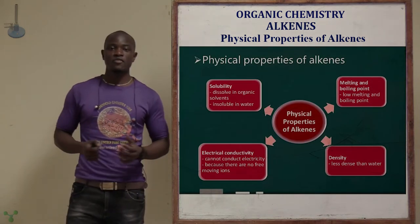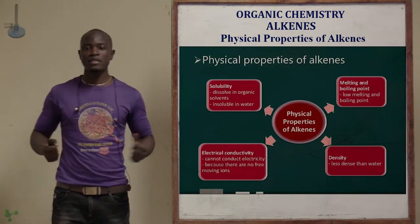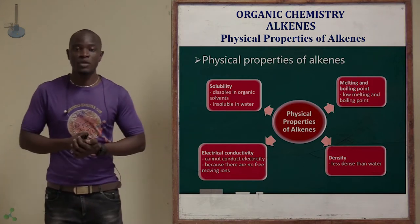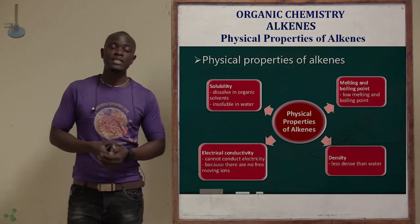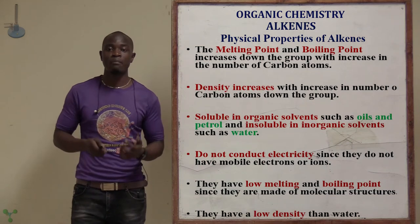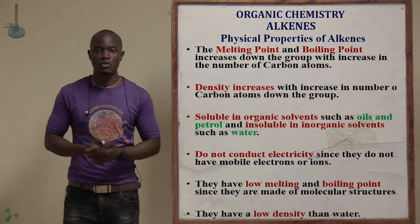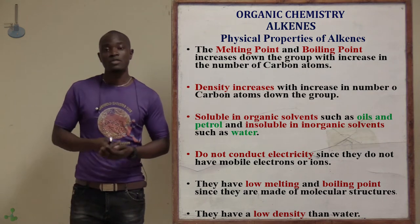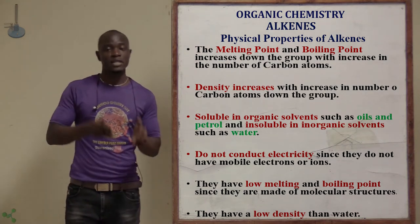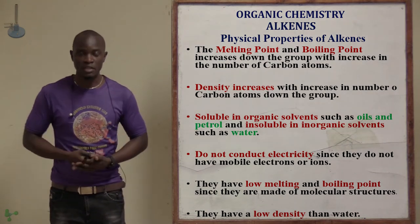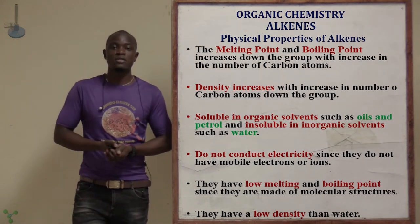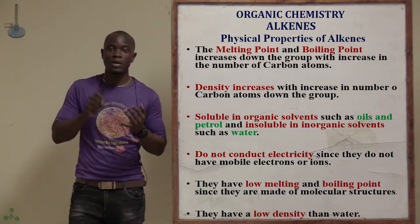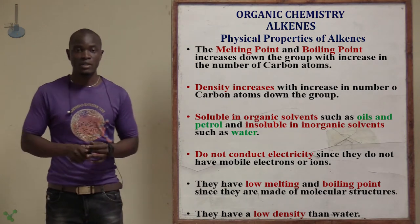Let's now look at the physical properties of alkenes. For alkenes, you'll notice that the melting and boiling point increases down the group as the number of carbon atoms increases. As the number of carbon atoms increases down the group, so also the melting point and boiling point will increase. The density also is going to increase down the group as the number of carbon atoms increases.